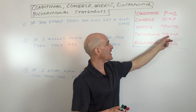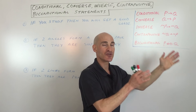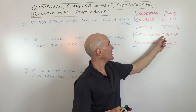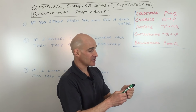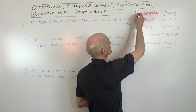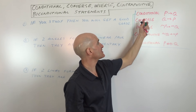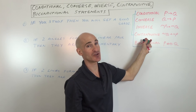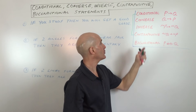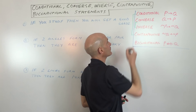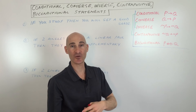The contrapositive is where you interchange the hypothesis and conclusion and negate both. So it reads: if not Q, then not P. The conditional and the contrapositive have the same truth value — if the conditional is true, the contrapositive is also true; if false, both are false. Same thing with the converse and the inverse — they share the same truth value; either both are true or both are false.